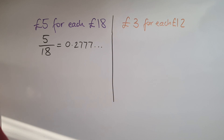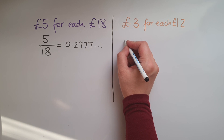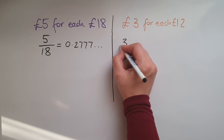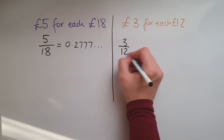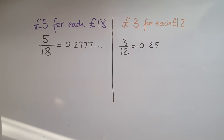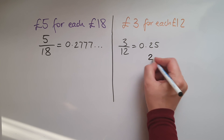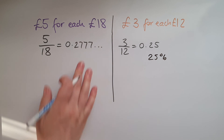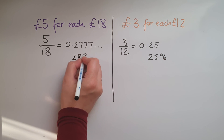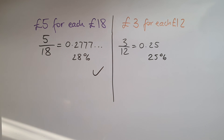And then three out of 12, so three divided by 12, gives us a quarter or 0.25. That is 25%, while the first is about 28%. So the first product works out better.